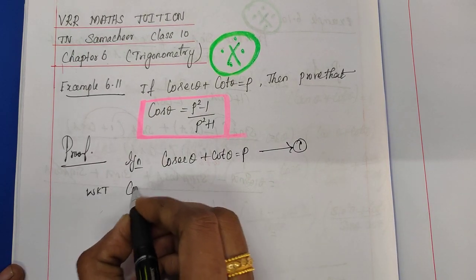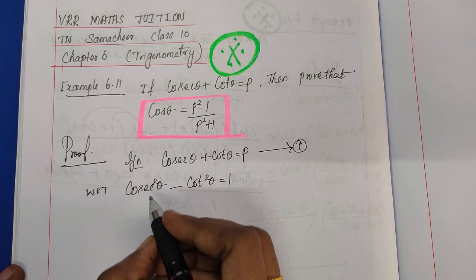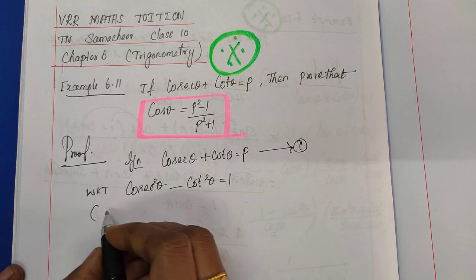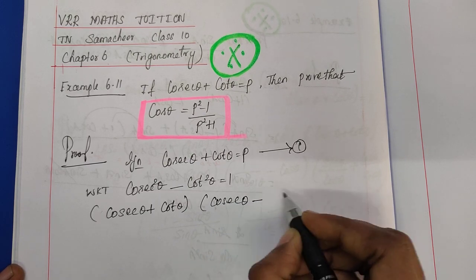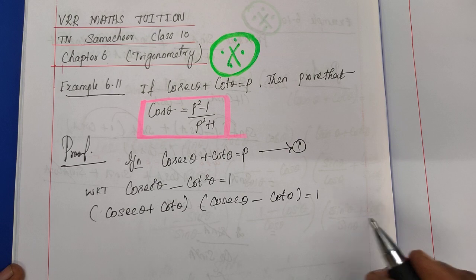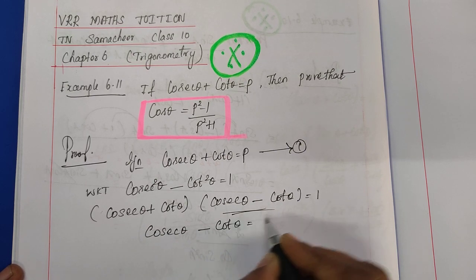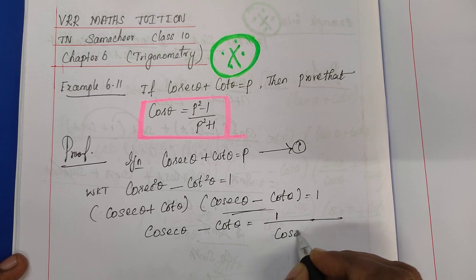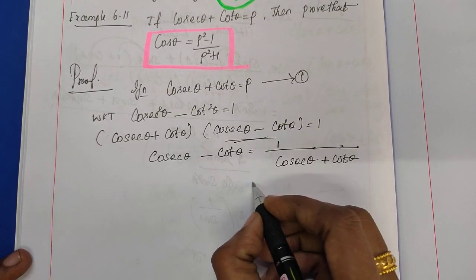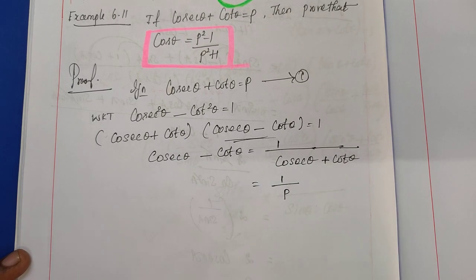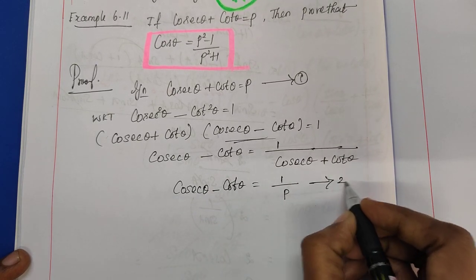We know the identity cosecant squared theta minus cot squared theta is equal to 1. Using the identity a squared minus b squared, we can write this as: cosecant theta plus cot theta, multiplied by cosecant theta minus cot theta, equals 1. Keeping the second term on the left-hand side, cosecant theta minus cot theta equals 1 divided by p. This is equation number 2.